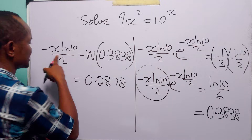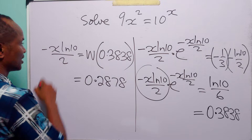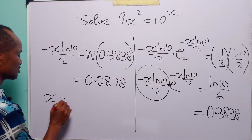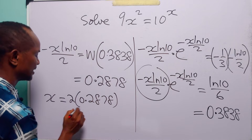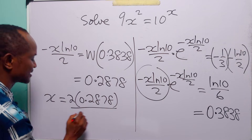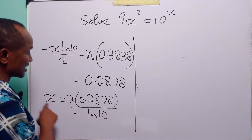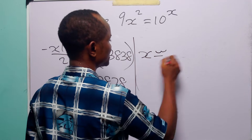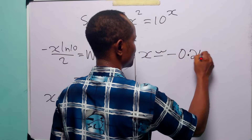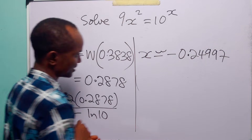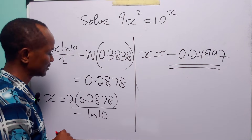So now we have that minus x ln 10 over 2 is equal to 0.2878, and of course it is now very easy to find the value of x. We know that x is going to be equal to 2 times 0.2878 divided by minus ln 10. Using the calculator, we have that x is approximately equal to minus 0.24997. This is the value of x that satisfies this exponential equation.